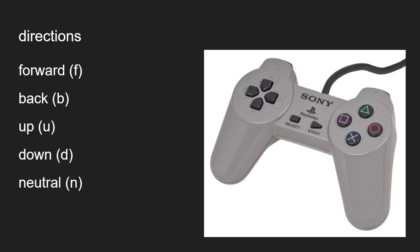When we talk about directions, we use F for forward, B for back, U for up, D for down, and N for neutral — because neutral is important in Tekken commands. You've got to think about whether you're doing a neutral input or not.